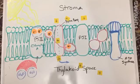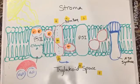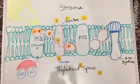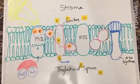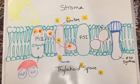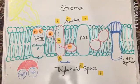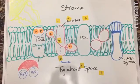Movement of electrons through the electron transport chain causes the proton pump to pump protons from the stroma into the thylakoid space, generating a proton gradient across the membrane.